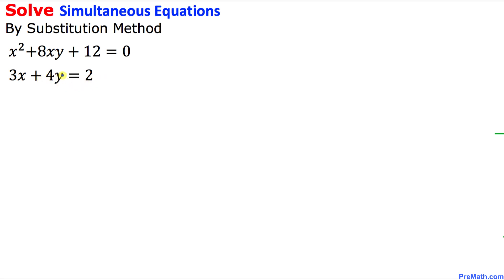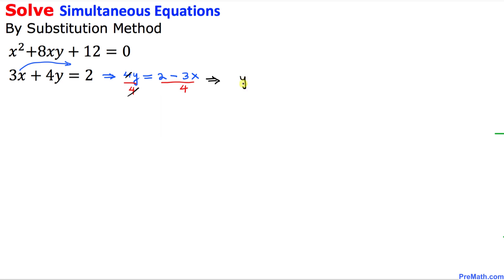Let's focus on the second equation. I am going to solve for y — that means I am going to isolate y. For that reason, I am going to move this 3x to the right-hand side. The left-hand side will be left with 4y equal to 2 minus 3x. Since we want to isolate y, I am going to divide both sides by 4, so we end up with y equals (2 minus 3x) divided by 4.